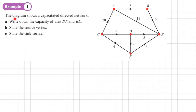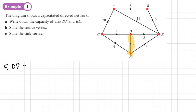Example 1. The diagram shows a capacitated directed network. In part A, we need to write down the capacity of arcs DF and BE. I can see that C is the source and E is the sink — we'd normally write these as S and T. Looking at arc DF, I can see its capacity is 2. This is not its flow — the flow would be written as a number in a circle.